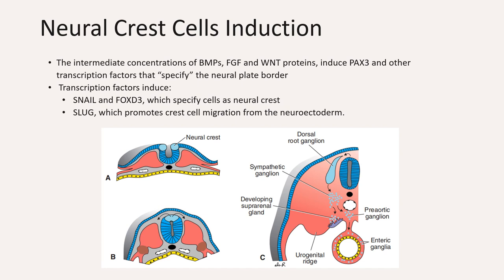There is also a second wave of transcription factors, for example Snail and FoxD3, which specify cells as neural crest cells, and Slug, which promotes crest cell migration from the neuroectoderm. In other words, the fate of the entire ectodermal germ layer depends on BMP concentrations as well as the presence of other signaling molecules. Abnormal concentration of any of these would be associated with neural crest defects, for example in the craniofacial region, as demonstrated in some laboratory animals.